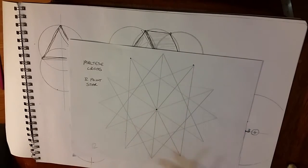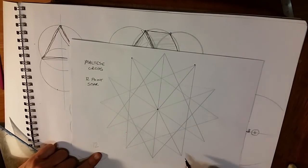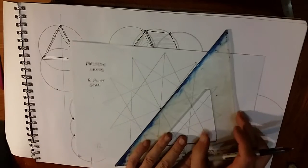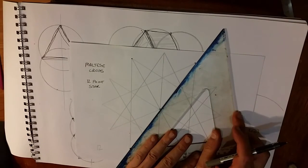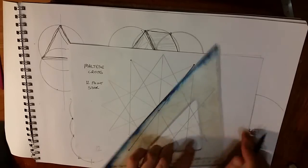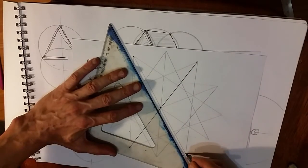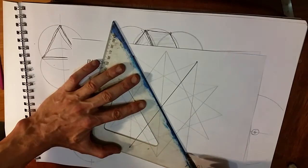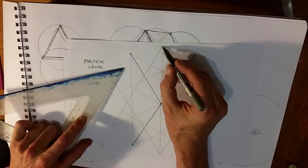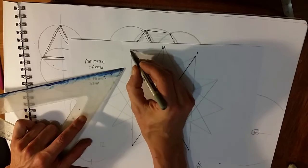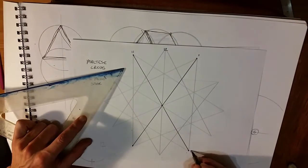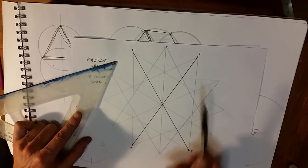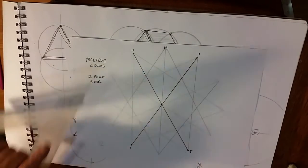Here we go to the center. So if this was a clock this would be 12, 1, 11, 5 and 7. So we've drawn a line from 11 to 5 and a line from 1 to 7.